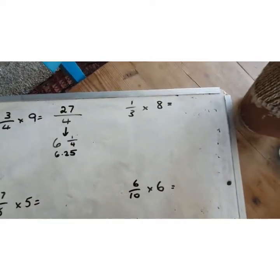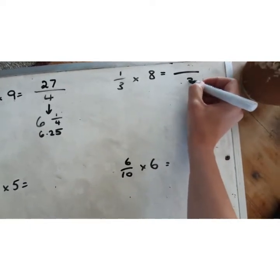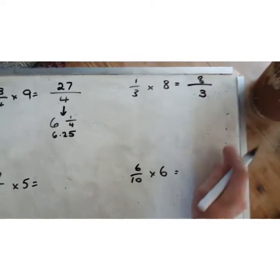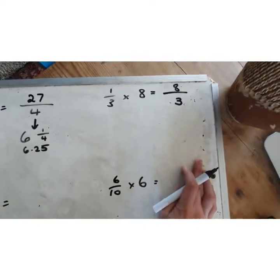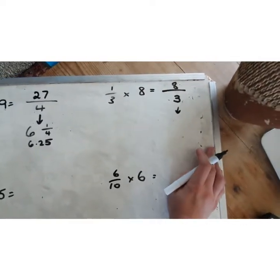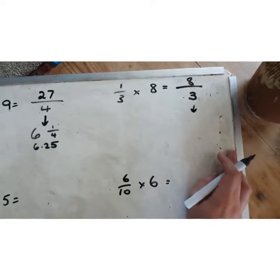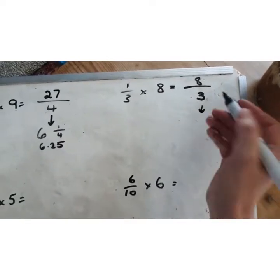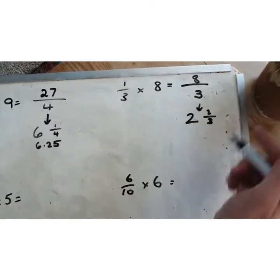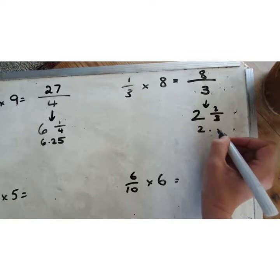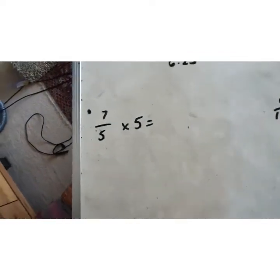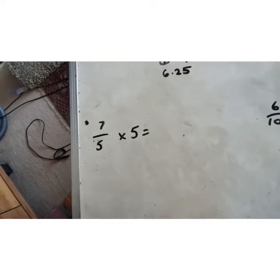One third times eight: our denominator stays the same. One times eight is eight, giving eight thirds. Extended further: eight divided by three is two remainder two, so that's two and two thirds. The decimal equivalent is 2.66 recurring.